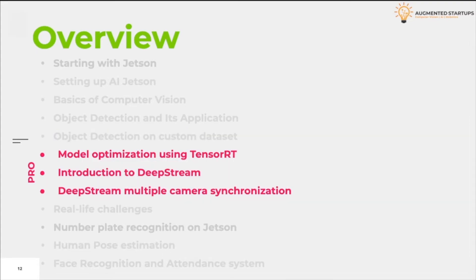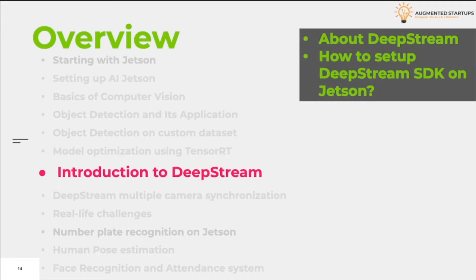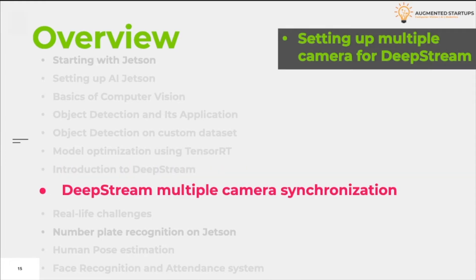In the next part of the course we will discuss two main things: optimization of machine learning models using TensorRT and also a few details regarding DeepStream. We will start with a brief discussion about TensorRT and how we can use it to optimize a machine learning model. Then we will move on to DeepStream, where we will see how to use the DeepStream SDK on the Jetson and try the synchronization of multiple cameras.